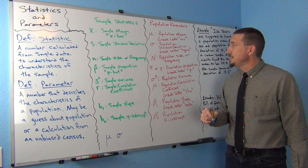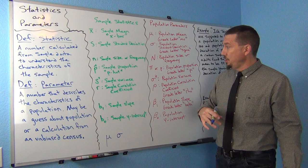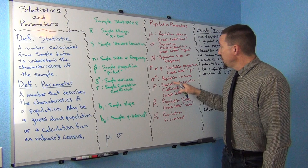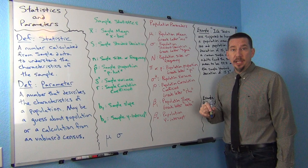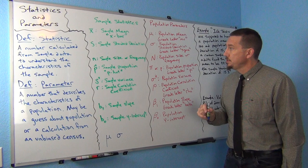Variance is the square of the standard deviation. So sample variance is s squared, and population variance is sigma squared. If you see the square on it, that means variance.